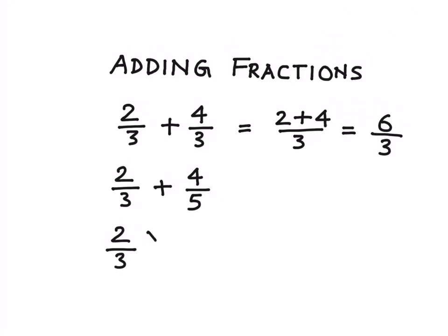So let's say in this case we multiply both numerator and denominator with the number 5.